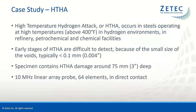The high-temperature hydrogen attack, or HTHA, is another hydrogen-related damage mechanism. This problem concerns steels operating at elevated temperatures above 400°F in hydrogen environments in refinery, petrochemical, and chemical facilities. HTHA is the result of hydrogen dissociating and dissolving in the steel, then reacting with the carbides to form methane, which cannot diffuse out of the steel. The methane accumulates at grain boundaries and eventually leads to the fissures and cracking typical of HTHA.